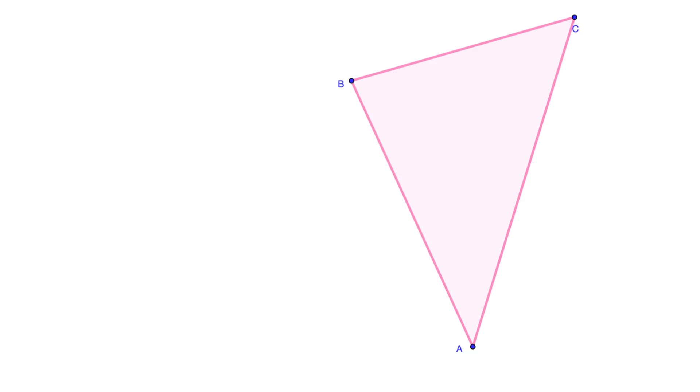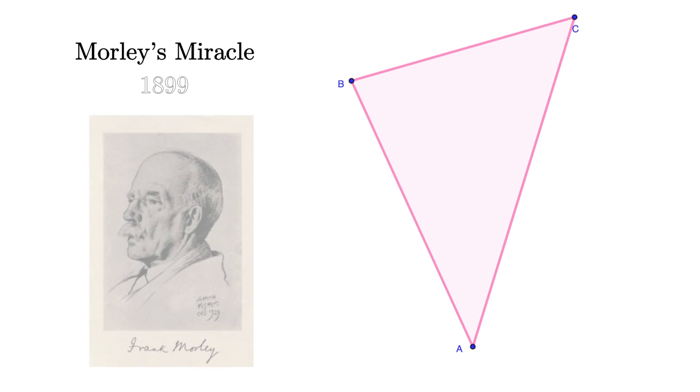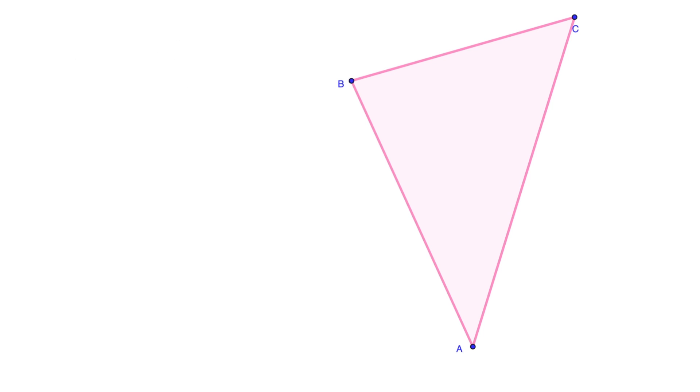The first theorem is so unbelievable that it is literally called a miracle in old textbooks. It is named after Frank Morley, who discovered it in 1899. It's simple: we take any triangle and trisect all of its angles.